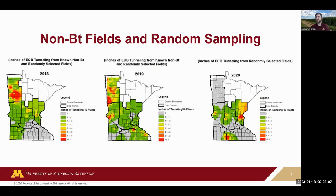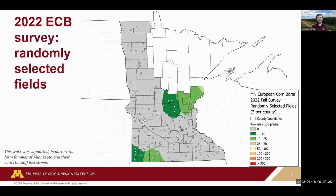Here's 2022 survey data, basically covering a large portion of the state by randomly sampling about two fields per county. We had several cooperators including Angie Peltier in northwestern Minnesota, Travis Fulmer doing much of the work in southwestern Minnesota, and Ryan covering southeastern Minnesota. Overall very low populations — the graph shows where we actually had positive finds; the gray dots represent zero counts for larvae or tunneling.